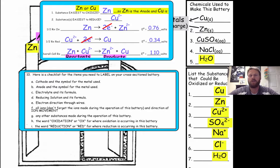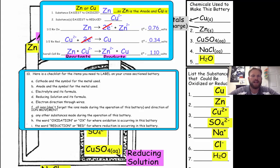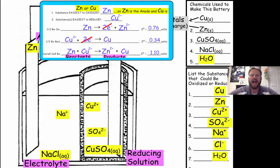Now that we know the overall reaction, we can continue with our checklist. We've labeled the anode and cathode. Now we're going to label the reducing solution and the electrolyte. The reducing solution always goes in the porous cup at the cathode, so copper sulfate is our reducing solution. We put its ions — Cu²⁺ and SO₄²⁻ — in the porous cup. The other aqueous solution automatically becomes the electrolyte, so we label NaCl as the electrolyte and split it into Na⁺ and Cl⁻ ions in the beaker.